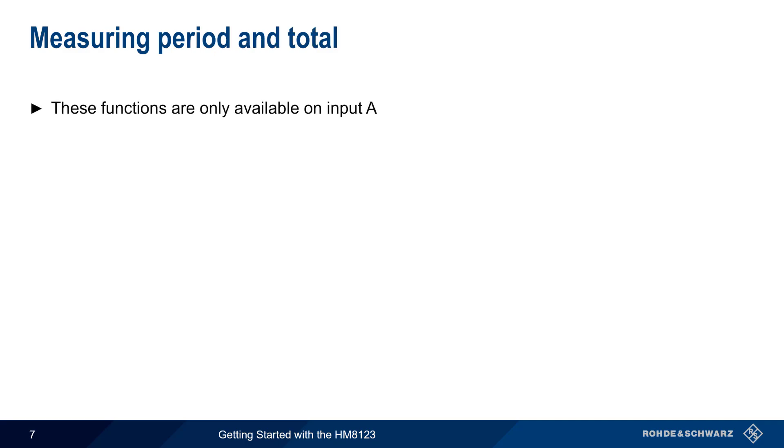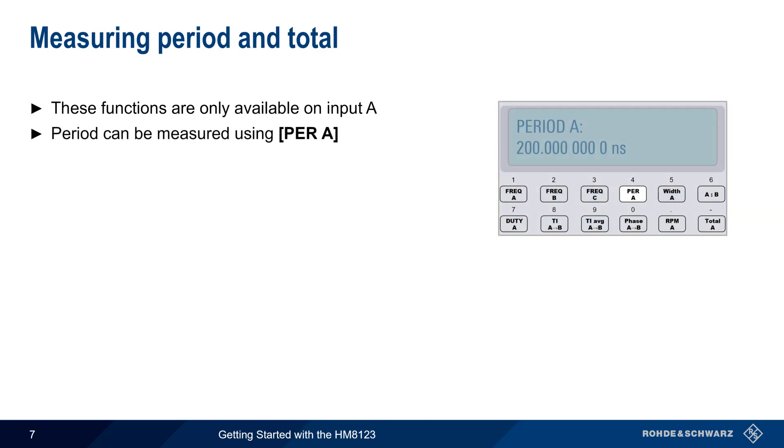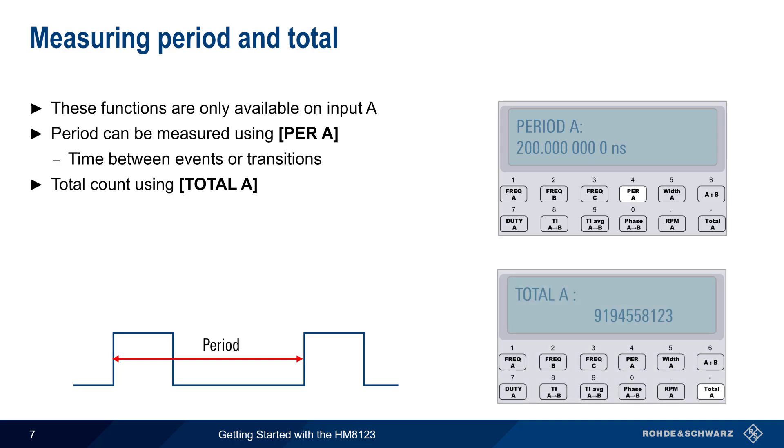The period and total functions are only available on input A. Period can be measured by pressing the period A button. This is the time between events or transitions. The total A key begins a count of all events seen. This can be reset by pressing total again, using the reset button, or by means of a signal at the reset BNC connector on the rear panel.